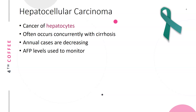Hepatocellular carcinoma is the cancer of hepatocytes, which are liver cells — that is, liver cancer. It often occurs concurrent with cirrhosis. Annual cases, however, are decreasing, and AFP levels are the tumor markers used to monitor hepatocellular carcinoma.